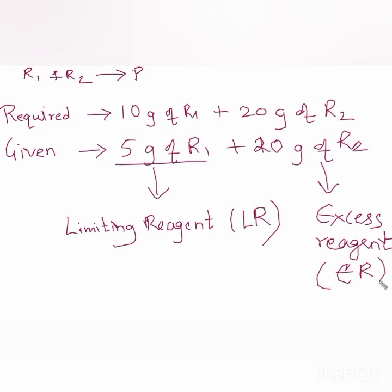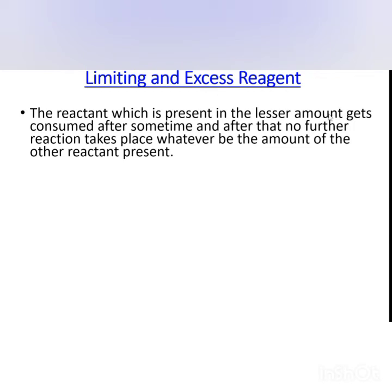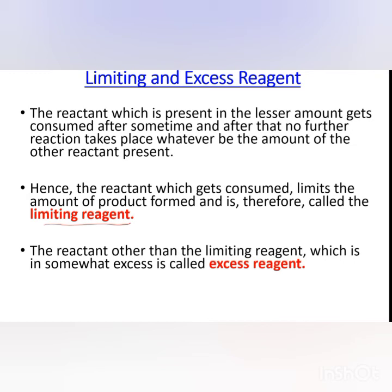And is given by LR. And one which is in excess is known as an excess reagent. So in this example, R1 is our limiting reagent and R2 is our excess reagent. Thus from this example we can conclude that the reactant which is present in the lesser amount gets consumed. Hence, the reactant which gets consumed and limits the amount of product formed is called as the limiting reagent, and the reactant other than the limiting reagent which is somewhat in excess is called as an excess reagent.